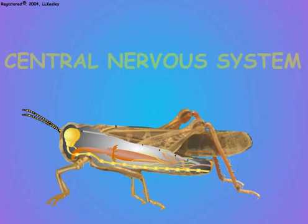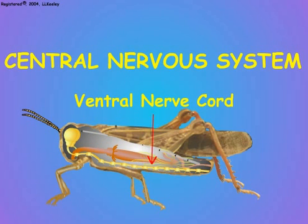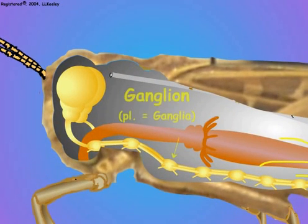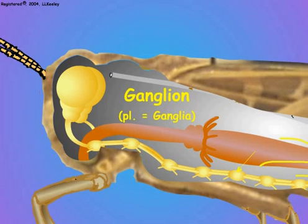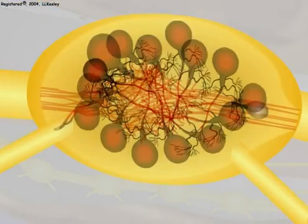Let us now look at the structure and function of the insect central nervous system. The central nervous system consists of a brain and a nerve cord on the ventral side of the insect body. A ganglion is a thickening of the nervous system where the cell bodies of the nerve cells are located. The ventral nerve cord consists of a series of ganglia, which are interconnected by paired nerves.